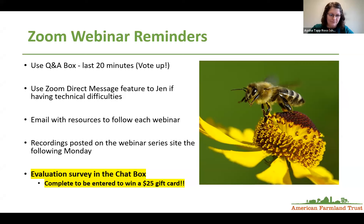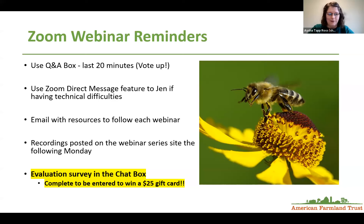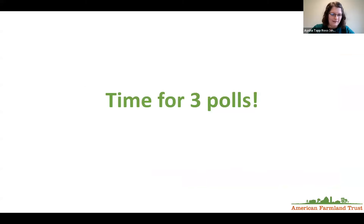I'm Aisha Tapp-Ross, Water and Soil Health Scientist for American Farmland Trust, and I'm joined by my colleague, research scientist Jen Tillman. For those of you who don't know, American Farmland Trust is a national nonprofit founded in 1980. Our mission is to save the land that sustains us by protecting farmland, promoting sound farming practices, and keeping farmers on the land and preparing the next generation of farmers.